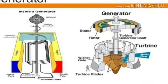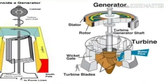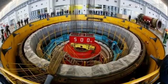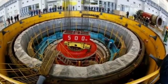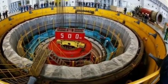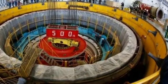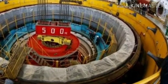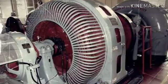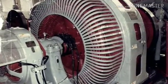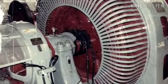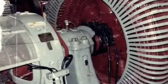The third component is the generator. The generator is connected to the turbine by a shaft and possibly gears, so when the turbine spins it causes the generator to spin also, converting the mechanical energy from the turbine into electric energy. Generators in hydropower plants work just like generators in other types of power plants.